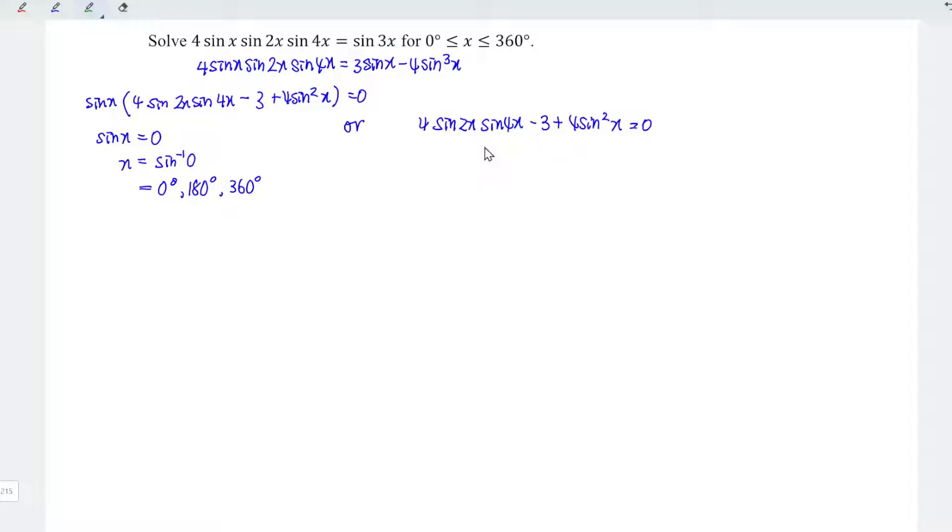Now let's solve for the second equation. We can apply the product sum identity for this term, which means that we should have 1 over 2 times cos big angle minus small angle. So we have 2x and we minus cos the sum of the two angles 6x. And this is equal to 2 cos 2x minus 2 cos 6x minus 3 plus 4 sine square x is equal to 0.